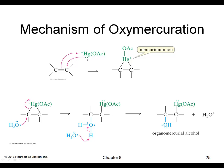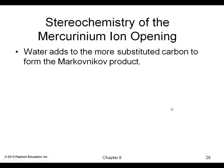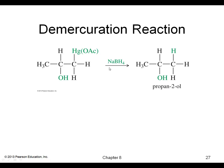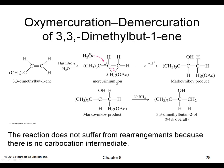Here's the mechanism: the pi bond attacks the mercury to give a three-membered mercurinium ion. Water then attacks the more substituted carbon, followed by deprotonation. Then the intermediate is reduced with sodium borohydride to give the alcohol. In the second step — the demercuration reaction — sodium borohydride removes the mercuric part.